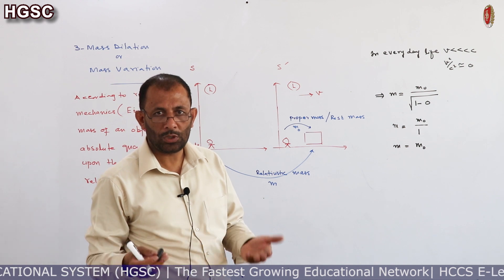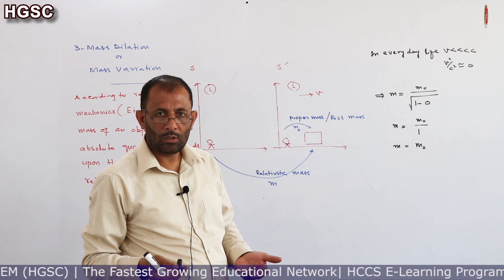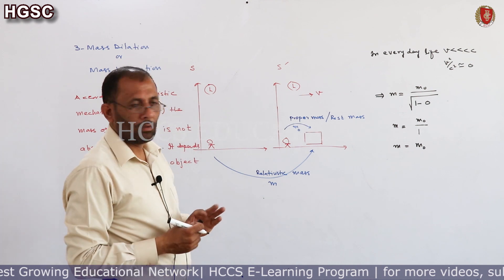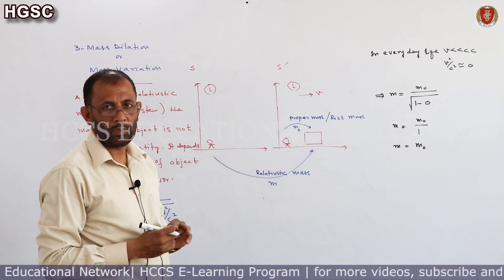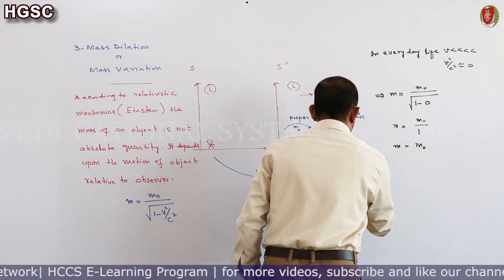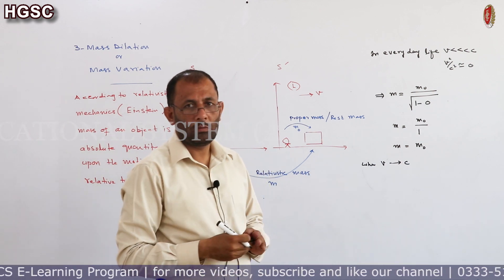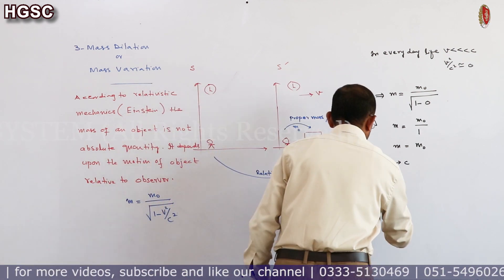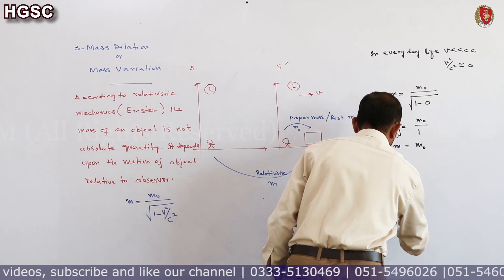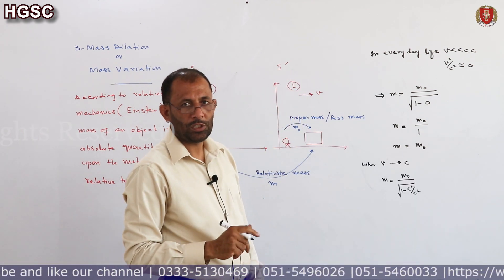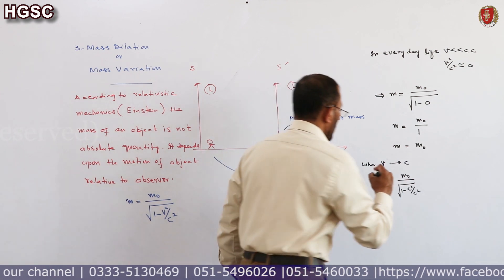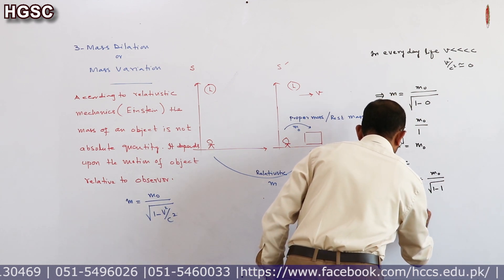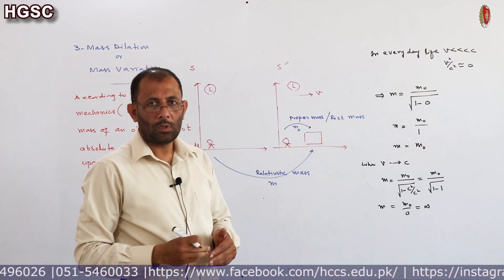جس کا مطلب ہے کہ روز مرہ زندگی میں ہمیں mass میں increase detect نہیں ہوتی کیونکہ ہماری velocities classical limits کی ہیں۔ Mass میں increase اس وقت آئے گی جب object relative to observer very high velocity کے ساتھ move کرے — when v approaches c. Suppose velocity approaches the velocity of light: m = m₀ / √(1 − c²/c²) = m₀ / √(1−1) = m₀ / 0 → infinity.